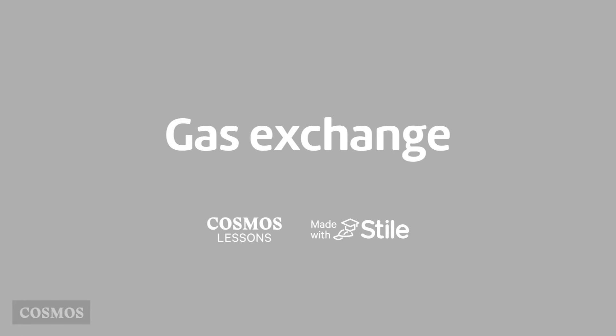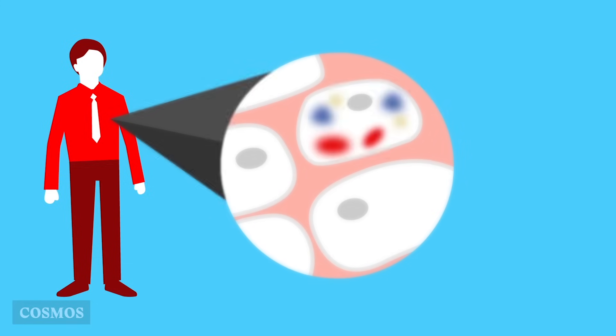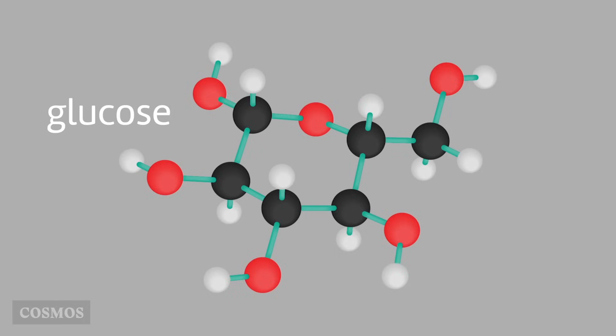Gas exchange. All of our cells need energy. They get it by breaking down glucose, a simple sugar we get from food.